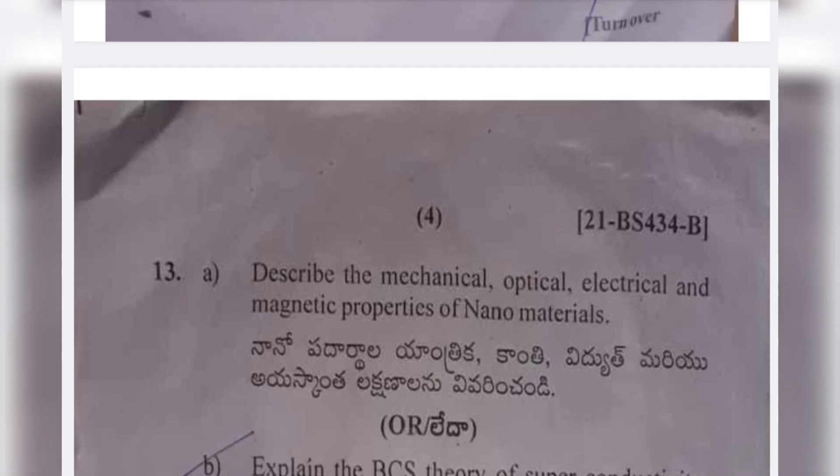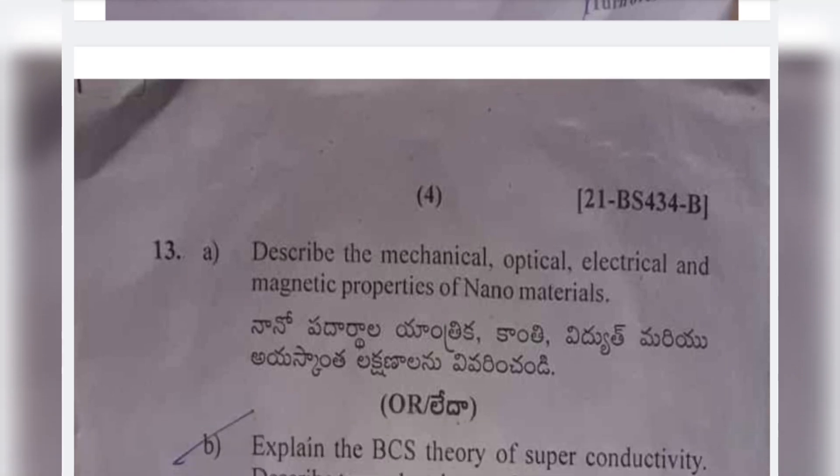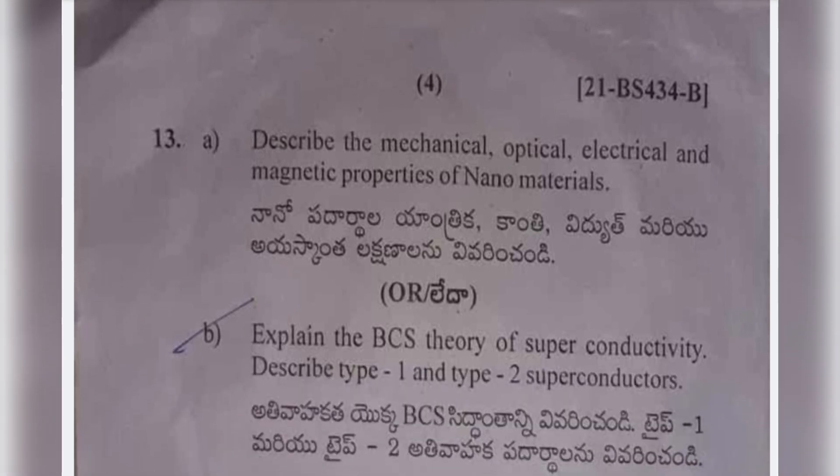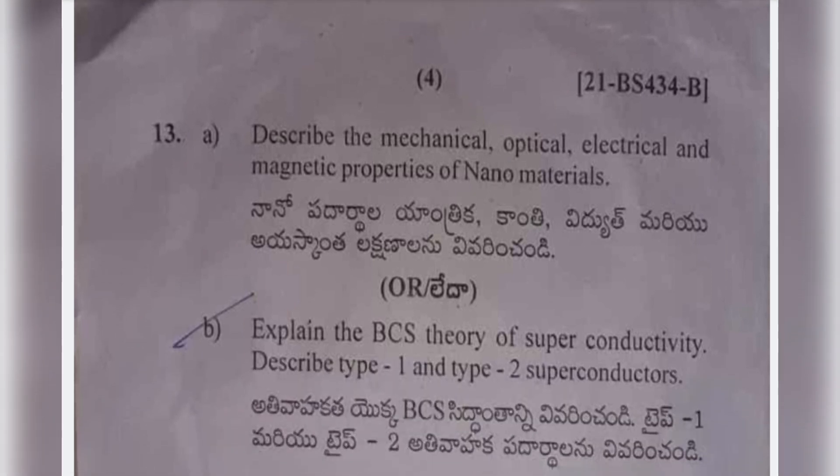Thirteenth (a): Describe the mechanical, optical, electrical, and magnetic properties of nanomaterials. Thirteenth (b): Explain the BCS theory of superconductivity and describe Type 1 and Type 2 superconductors. These are all the short and essay questions from the Physics 4B Modern Physics real question paper.